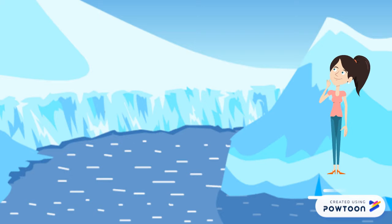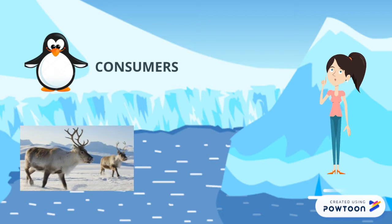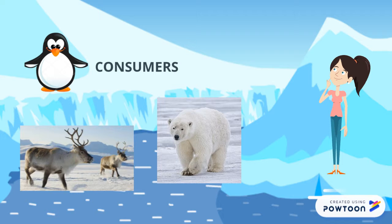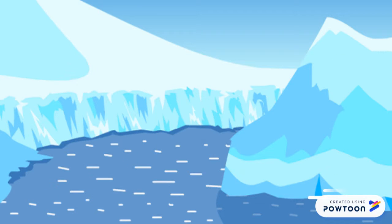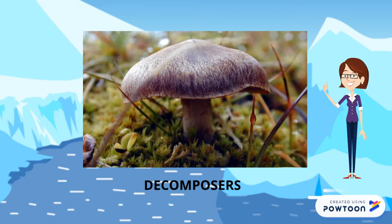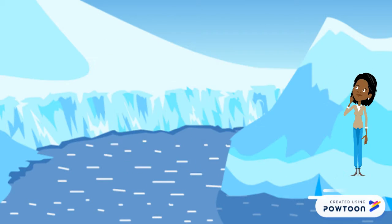These are the animals. Animals are consumers. Some examples are reindeer, polar bear, Arctic fox, narwhal, walrus, seal, ox, moose, orca, puffin, wolverine, ermine, Arctic hare, lamprey, and snowy owl. The fungi are the decomposers. Some examples are slime molds and mycelium.